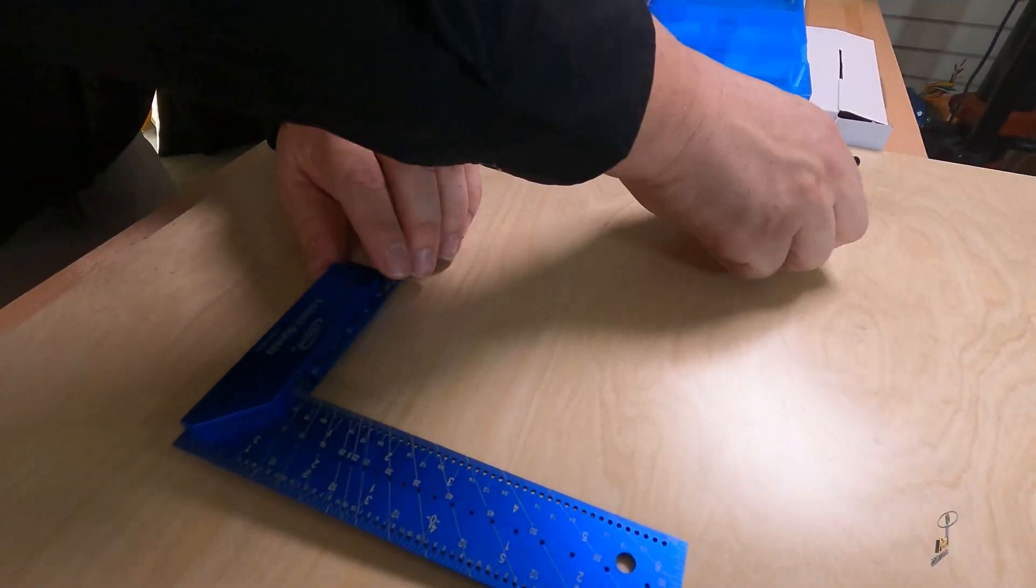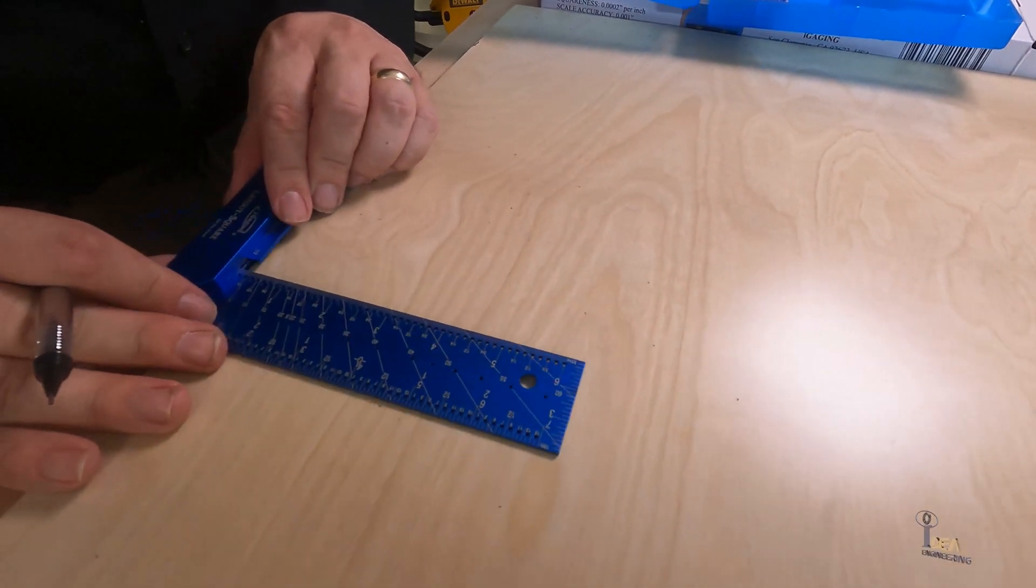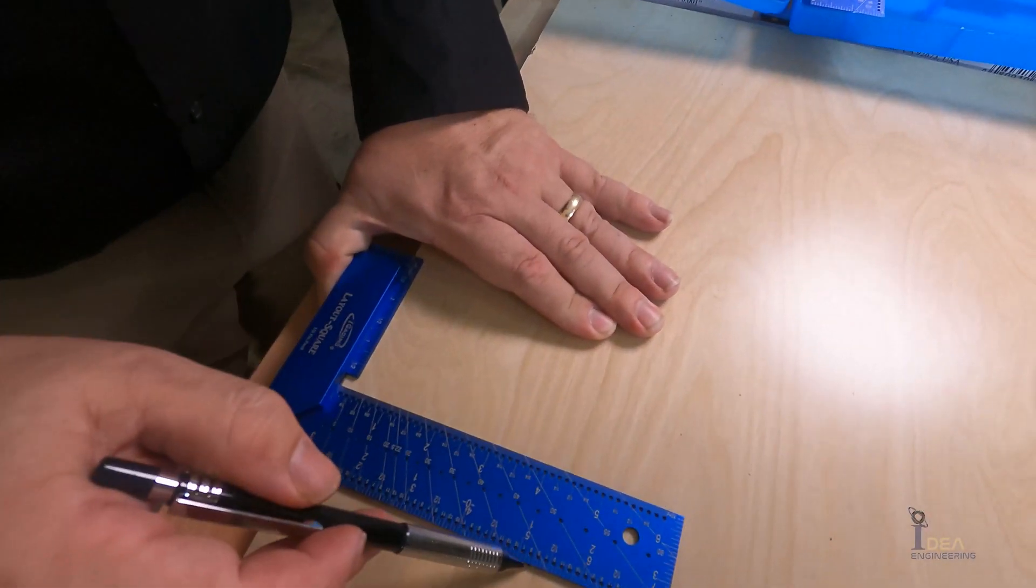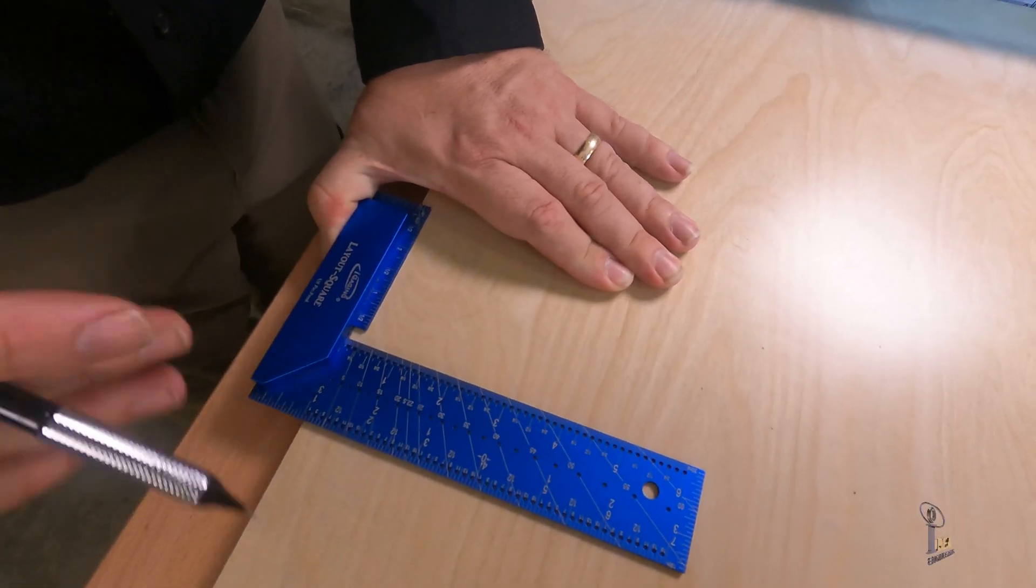Now for making a right angle, it works just like any other square. Make a right angle and draw off the side, okay.